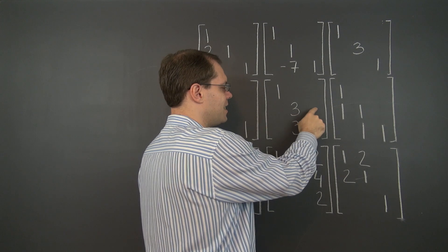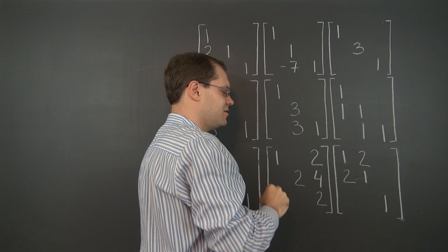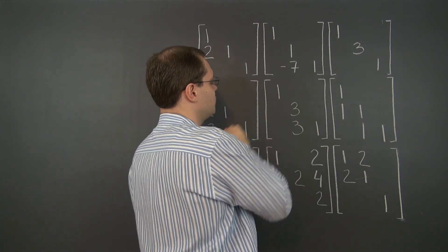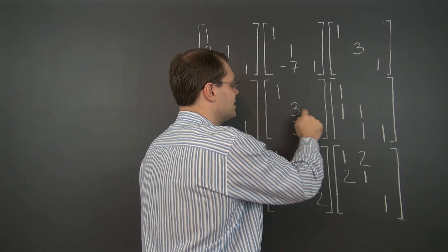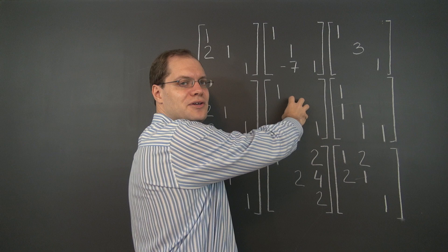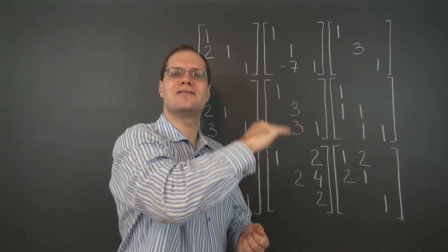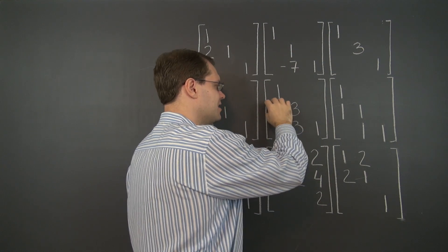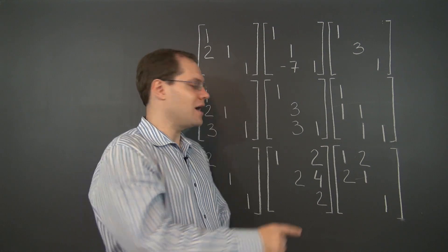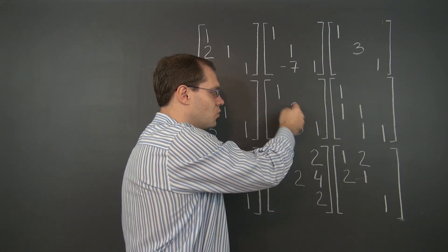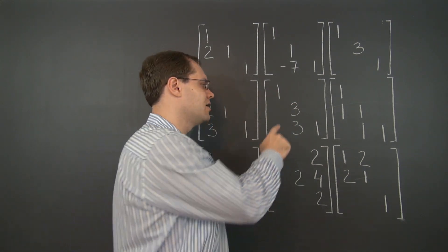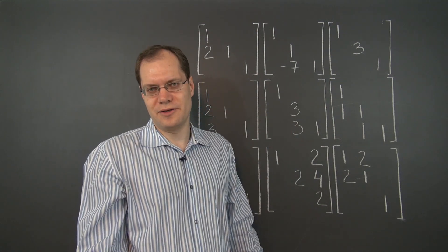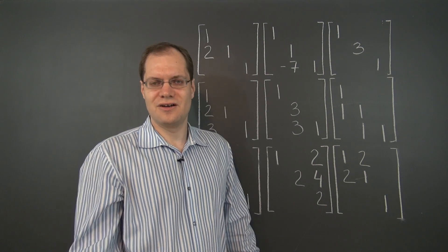Here's one way: multiply row two by three — now we have a three here. Then add row two to row three. All these row operations accumulate as a combined effect. Now let's do it in the opposite order: add three of row two to row three first, and then multiply row two by three. So depending on the order, the operations are actually different.